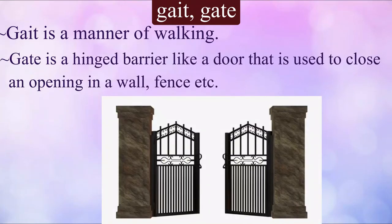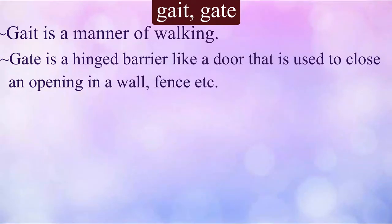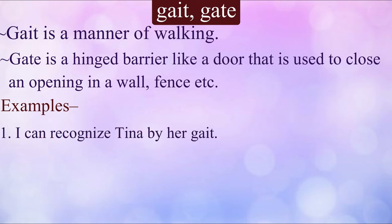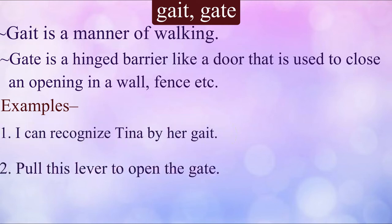'Gait' refers to a manner of walking, whereas 'gate' is a hinged barrier like a door used to close an opening in a wall or fence. Let's read the examples: I can recognize Tina by her gait. Pull this lever to open the gate.